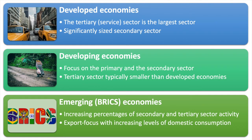Developing economies typically have larger primary and secondary sectors. Burma's primary sector accounted for roughly 24% of its GDP in 2017, whereas the secondary sector contributed approximately 36%, and the service sector was about 40% of GDP. The emerging economies usually have rapidly growing secondary and tertiary sectors. China's economy in 2017 consisted of about 52% of activity from services and 40.5% from manufacturing, with the agricultural sector contributing about 8% to GDP. China has been aiming to develop domestic consumption and move away from the export-led growth that has brought it thus far.